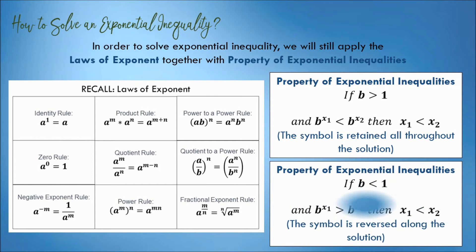But if b is less than 1, and b raised to x sub 1 is greater than b raised to x sub 2, then x sub 1 is less than x sub 2. It only means that the inequality symbol is reversed along the solution.